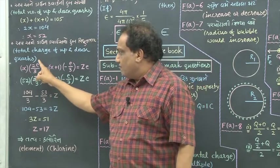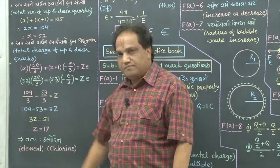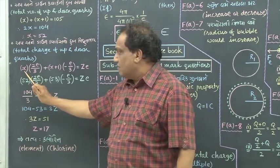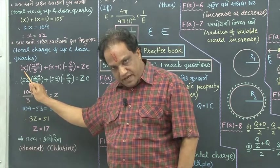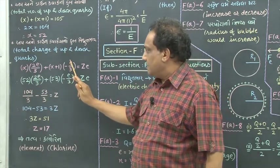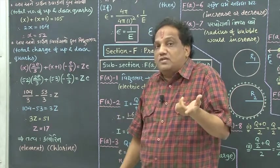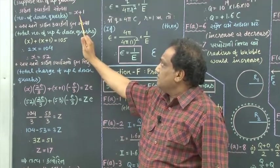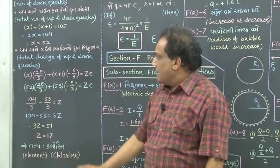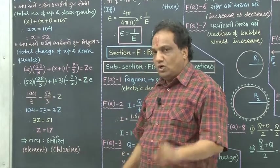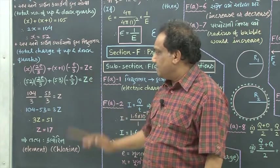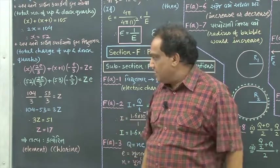What is the charge of one up quark? It is 2E by 3. And there are x number of up quarks, so I just multiply by x. What is the charge of one down quark? It is minus E by 3. And there are x plus 1 down quarks, so I multiply by x plus 1. This is going to give me the total charge of the nucleus, which is the positive charge, plus Z into E.